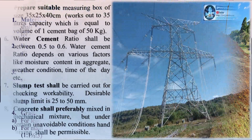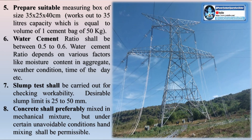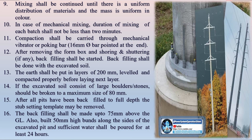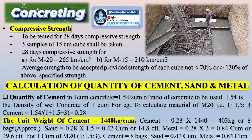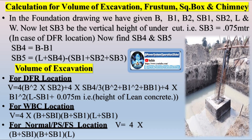The timing of the soil investigation is important because the results directly influence the foundation design and construction schedule. If the soil investigation reveals problematic conditions — such as soft soils, high water tables, or areas prone to erosion or landslides — the design of the transmission line may need to be modified. By conducting the soil investigation early in the process, engineers can address these issues before construction begins, avoiding costly delays and redesigns. The soil investigation also helps identify seismic risks, and in earthquake-prone areas, special foundation designs may be required to ensure that the transmission towers can withstand seismic forces.